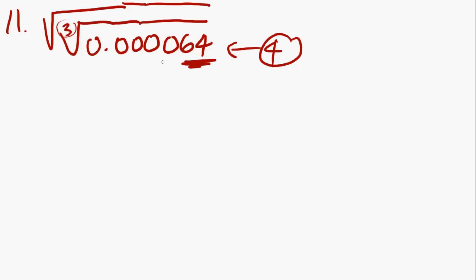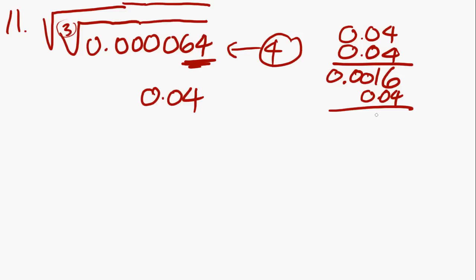You know that 4 times 4 times 4 equals 64, you just have to figure out how many zeros are in front of it. The answer here is 0.04. If you want to see what happens when you multiply these together, you get 0.0016 because of the four digits behind the decimal. And if you multiply this by 0.04 again, you end up with 0.000064.